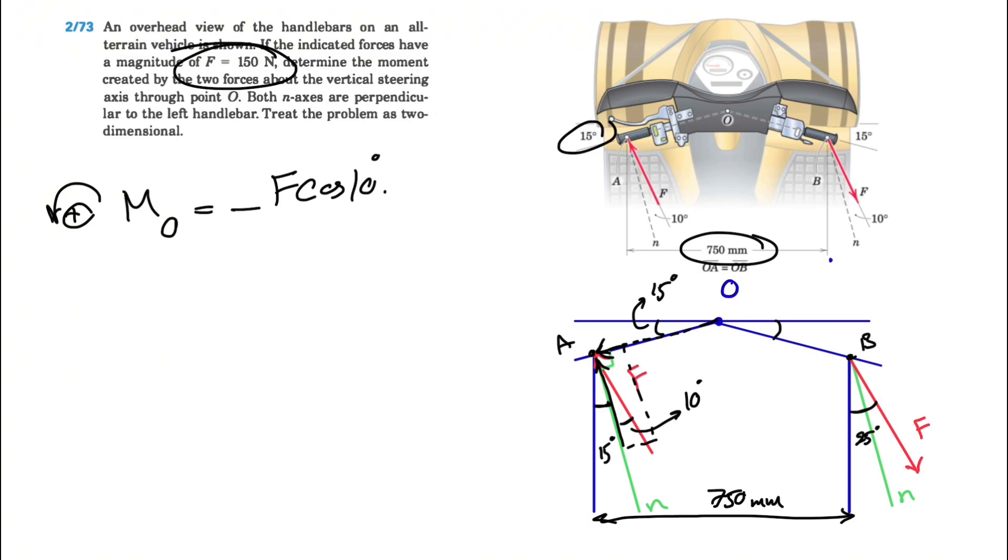We have negative, minus F cosine of 10 degrees. We know F is 150, and the distance that we have here is the hypotenuse of this right triangle. The hypotenuse of this right triangle would be our position vector, or the distance between O and A.